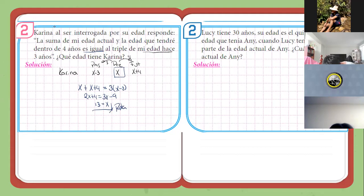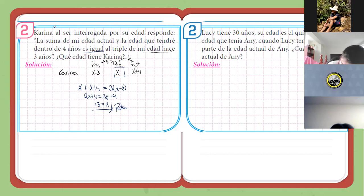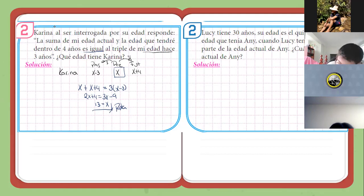Intenten el dos espejo. La idea en el ejercicio es plantear primero qué está pasando hacia el pasado y hacia el futuro, y luego plantear la ecuación directamente. Ya a medida que ganan práctica, ya no va a ser necesario que planteen esa parte y pueden plantear directamente la ecuación. Claro que si el problema es un poco más complejo, va a ser necesario.